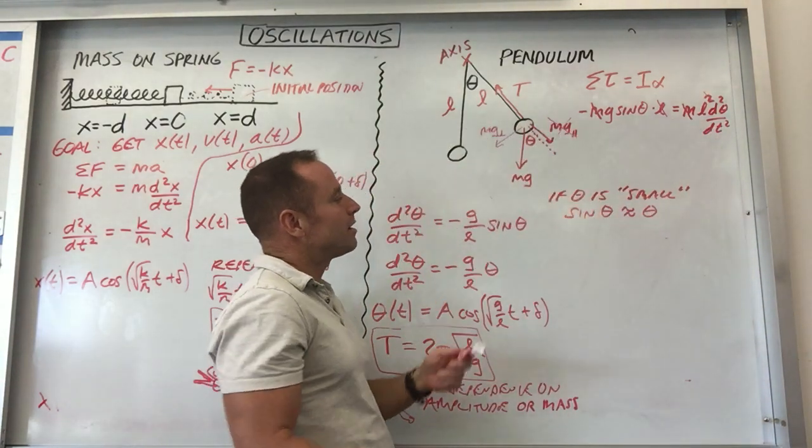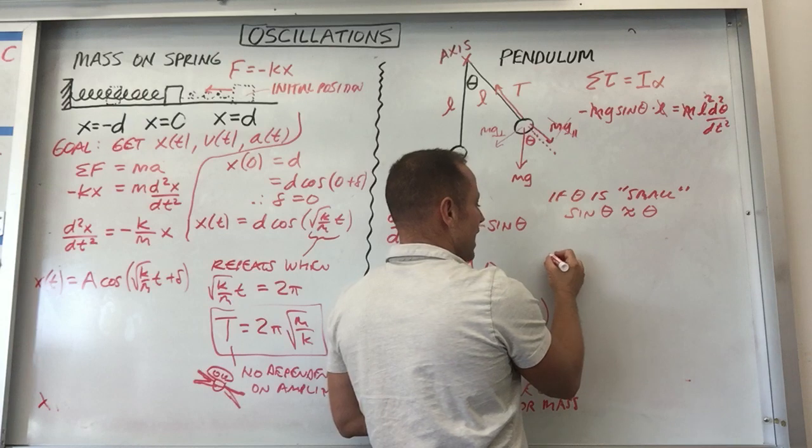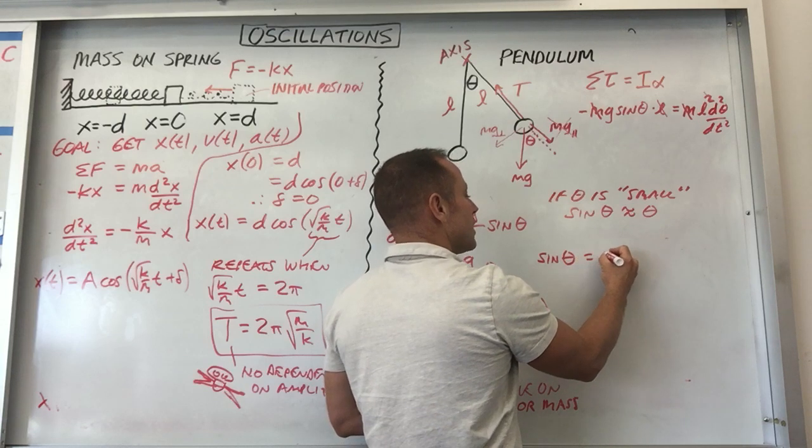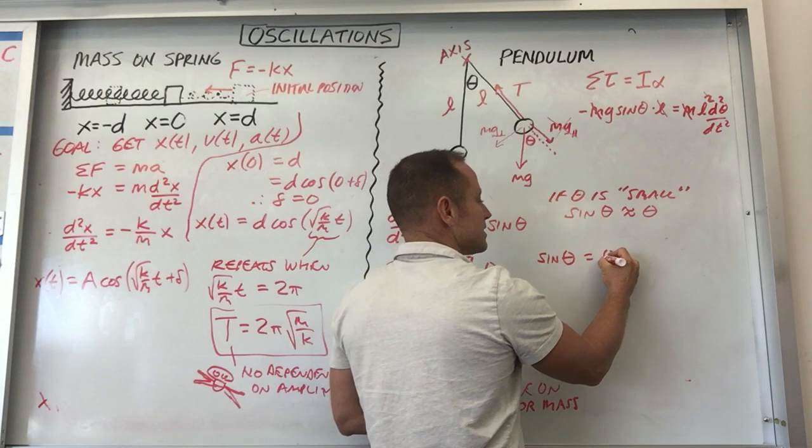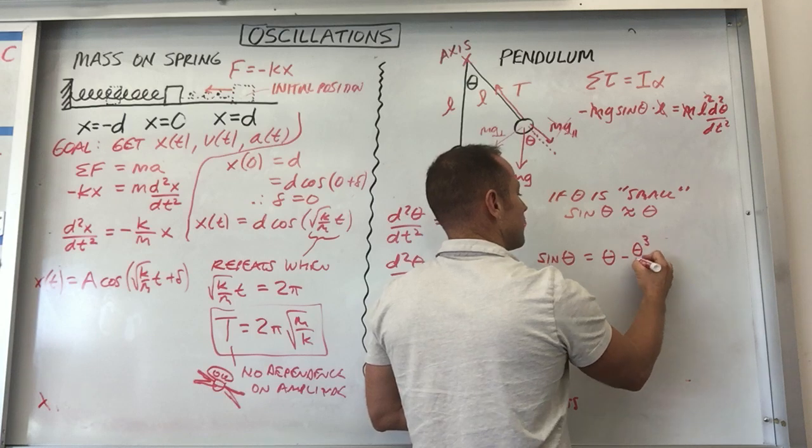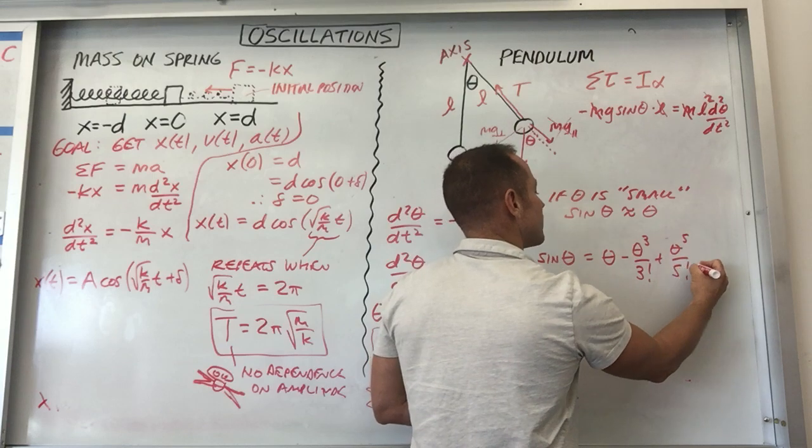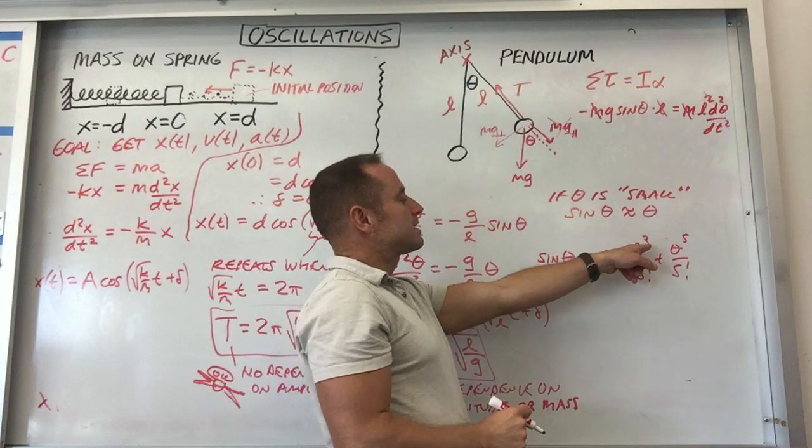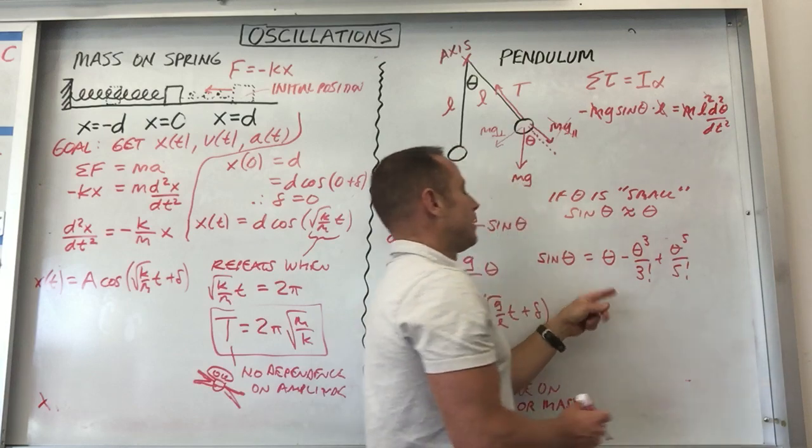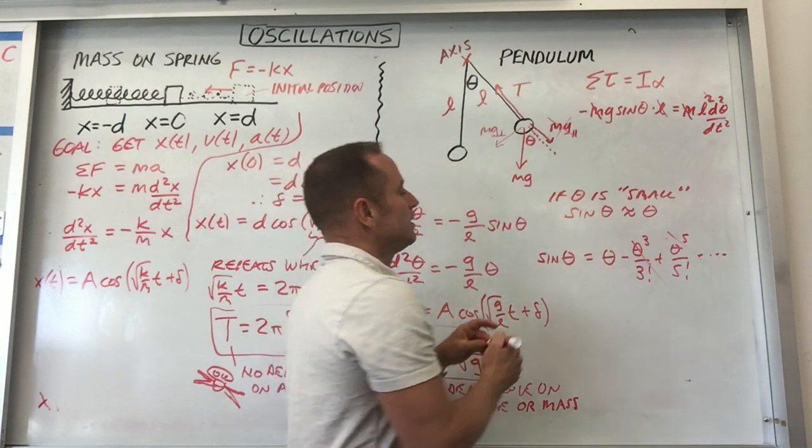As far as the small angle approximation goes, one way to see why we could maybe get away with this is if you've had enough math to know about Taylor series. Sine theta, you can write as an infinite series that goes like theta minus theta cubed over three factorial plus theta to the fifth over five factorial. And so if theta is really small, theta cubed would be super tiny and theta to the fifth would be really tiny. What you're basically doing is neglecting these like higher order terms. And so you're just kind of cherry picking out this first term.